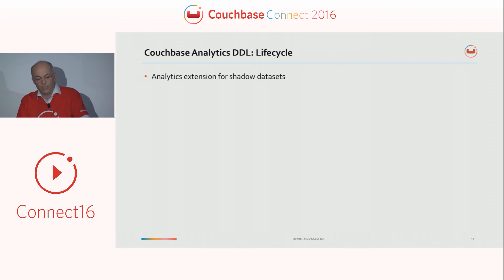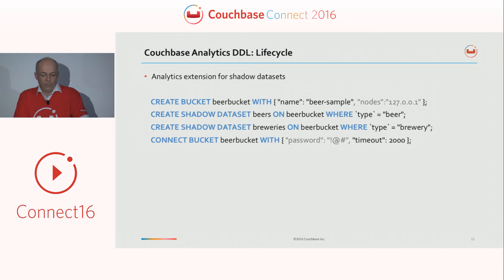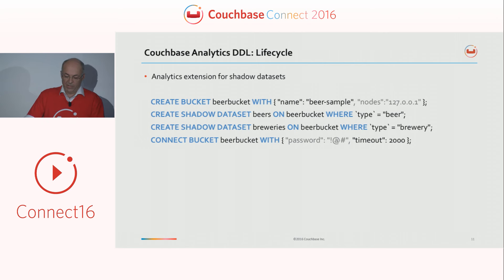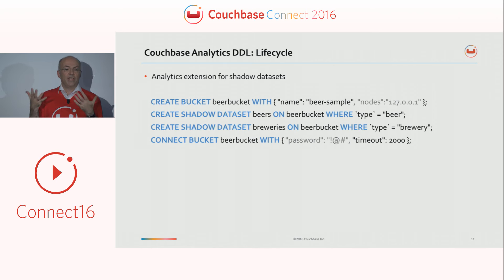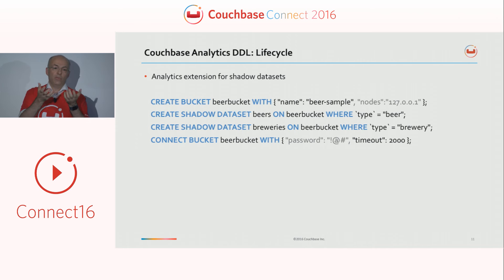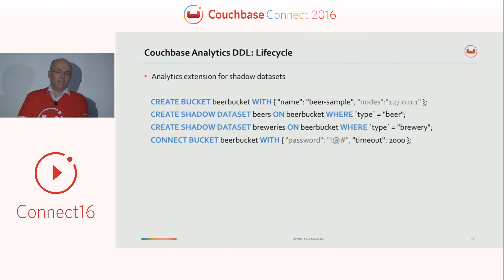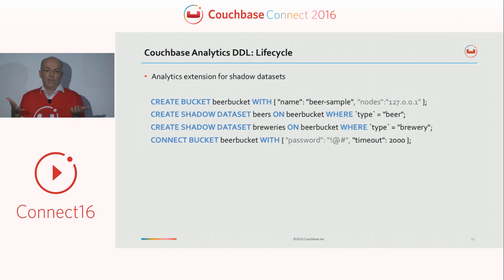Now the question is: how did you get the data into this? We have this additional new service — how does it get data in? To do this, we have an extension we call shadow data sets. With these statements, the four statements you see here will create two shadow data sets. The first is a CREATE BUCKET statement, which creates a proxy for a bucket that exists on a data node for the analytics service — we're declaring for the analytics service that there is a bucket on that data node containing the data we're looking at. We call these shadow data sets rather than replicas, to avoid confusion with high-availability replicas.